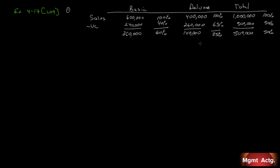Subtracting fixed costs of $400,000 leaves $100,000 as operating income. I prefer to bring fixed costs all the way into the total column since we're only concerned with the total. If you're doing this in Excel with 10 different products, scanning across the screen for numbers can be cumbersome. It's a matter of preference—there's no one true way to do it.